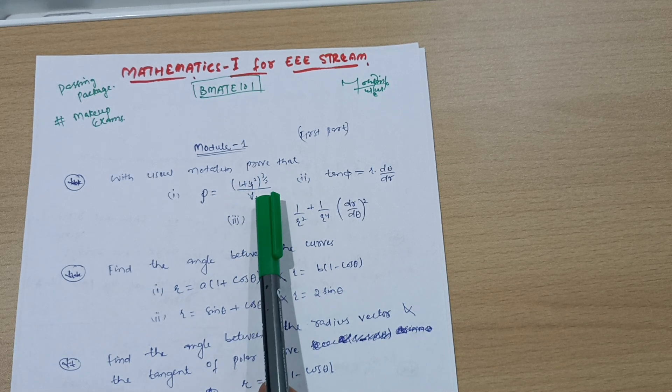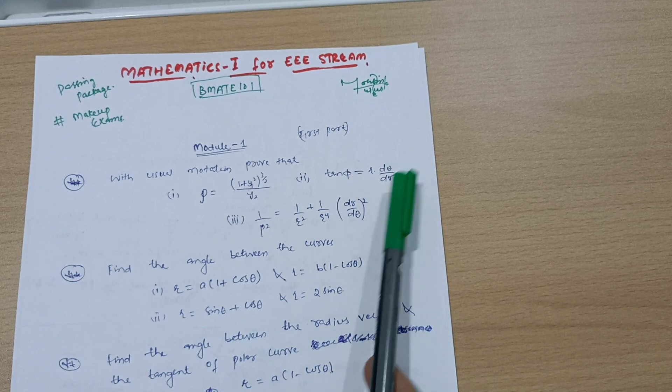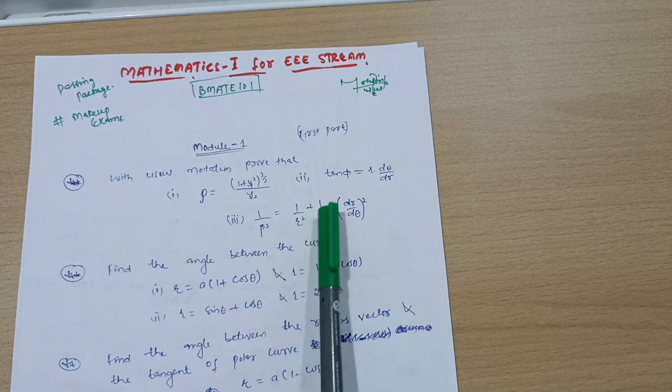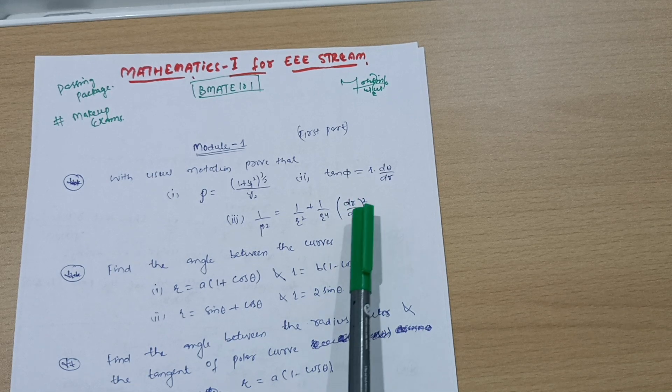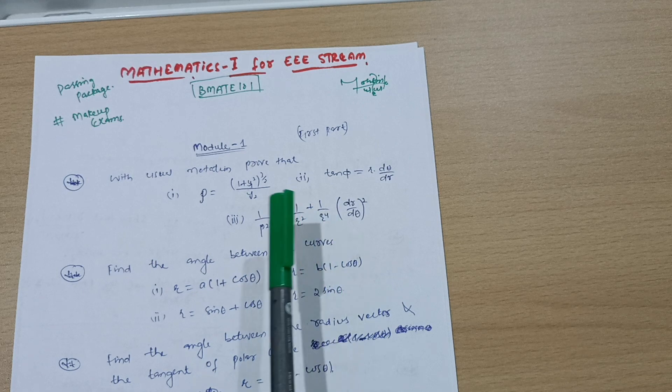Also prove psi equals r d theta by dr, and 1 by p squared equals 1 by r squared plus 1 by r to the power 4 times dr by d theta whole squared. These three derivations you should surely go through and you will get six to seven marks.